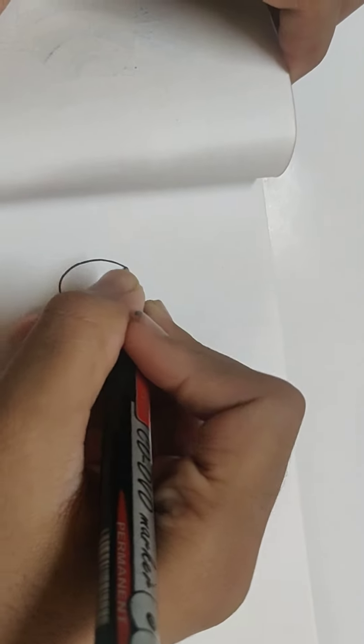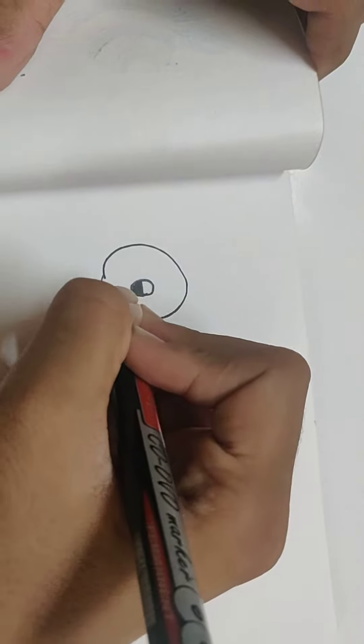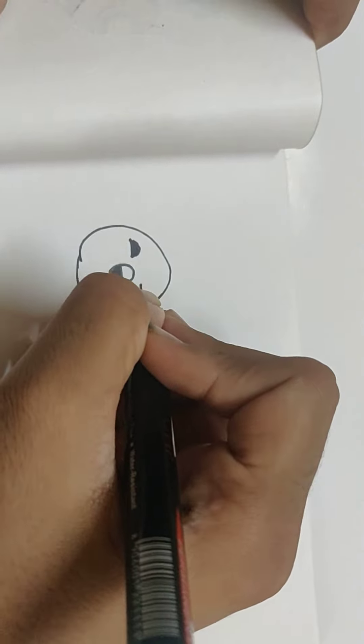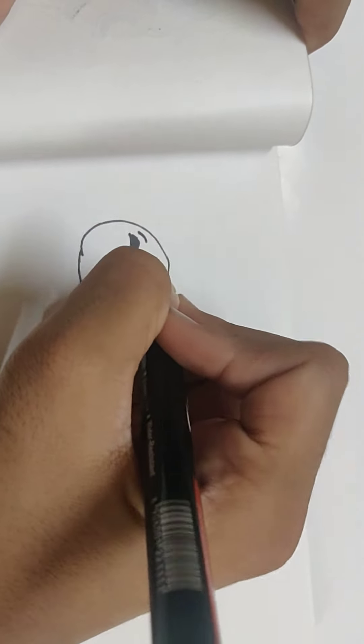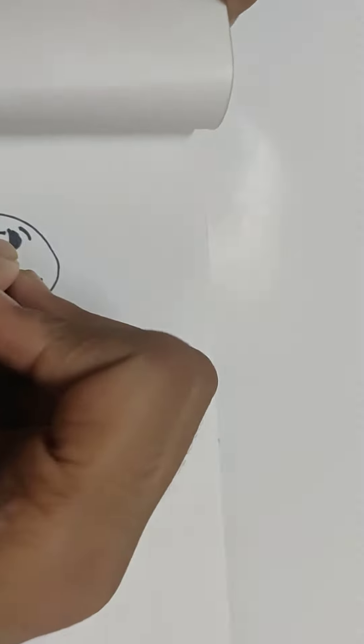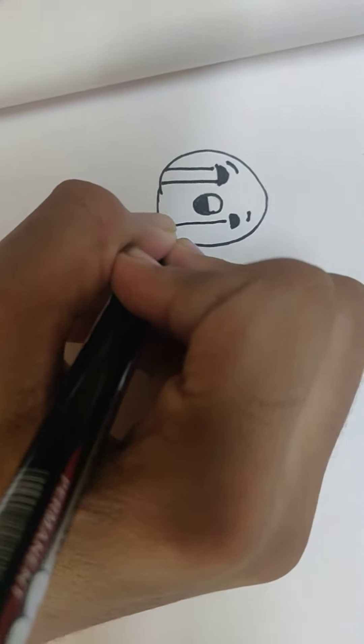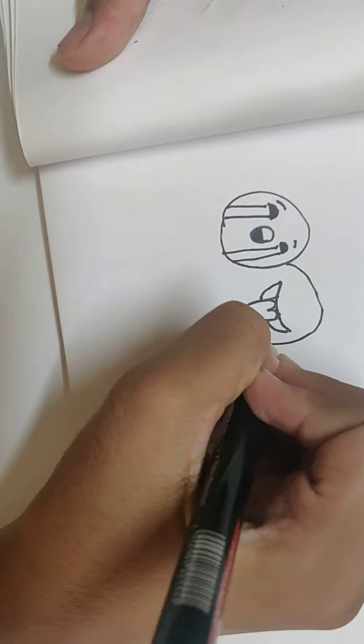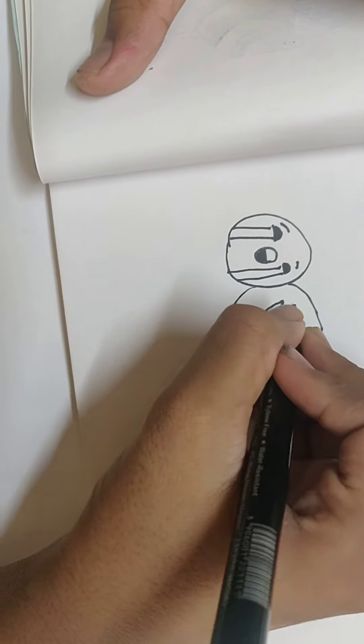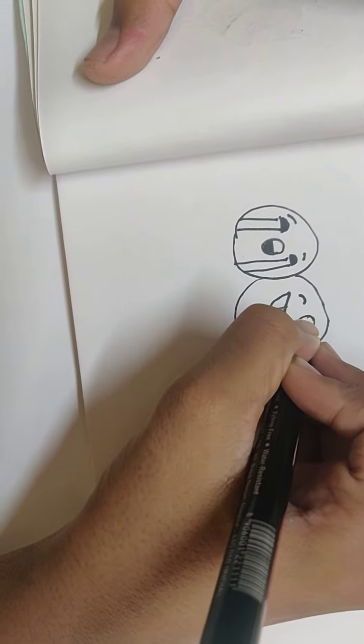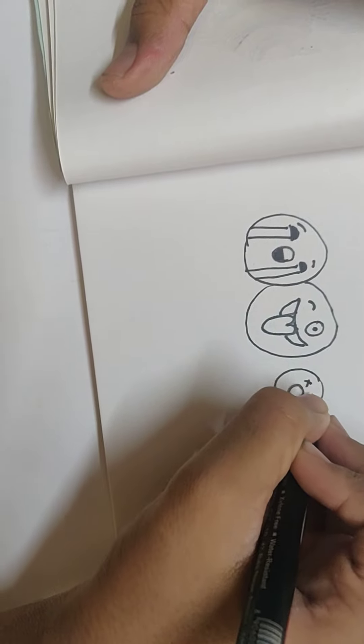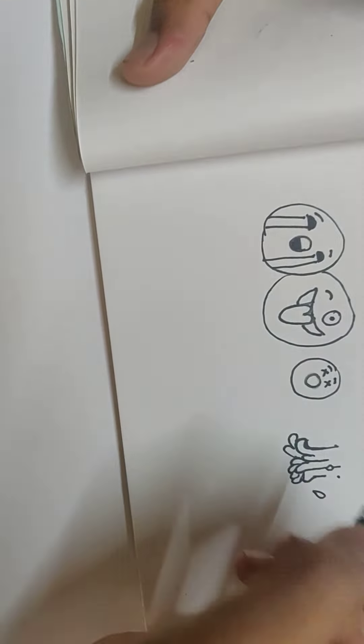I can draw these circles for the first one. This is going to be the mouth of the first emoji. And now the last one.